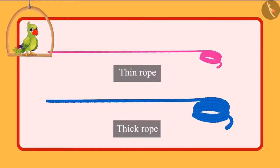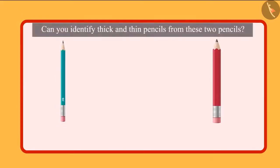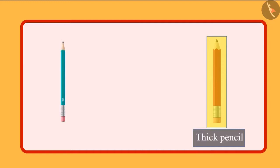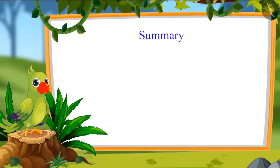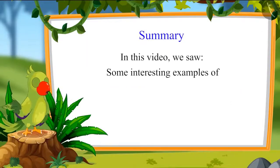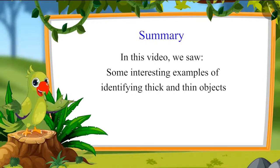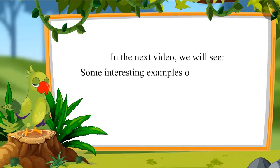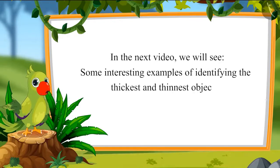So children, you saw Chotu and Pinky chose the thick rope instead of the thin rope to hang a swing. Can you identify the thick and thin pencil from these two pencils? Yes — this is the thick pencil and this is the thin pencil. That's all for today. In this video, we saw some interesting examples of identifying thick and thin objects. In the next video, we will see examples of identifying the thickest and the thinnest objects. Till then, bye children.